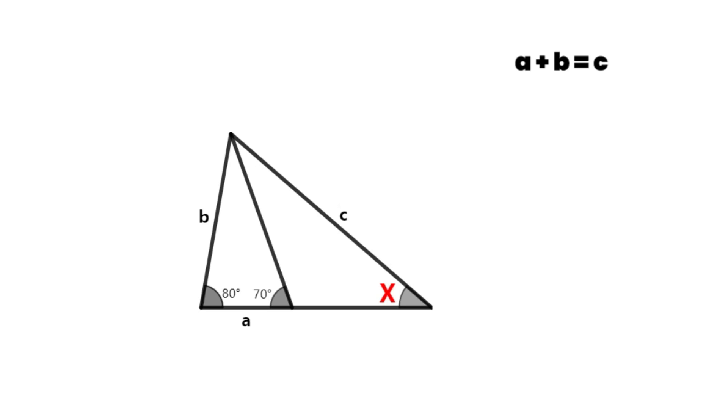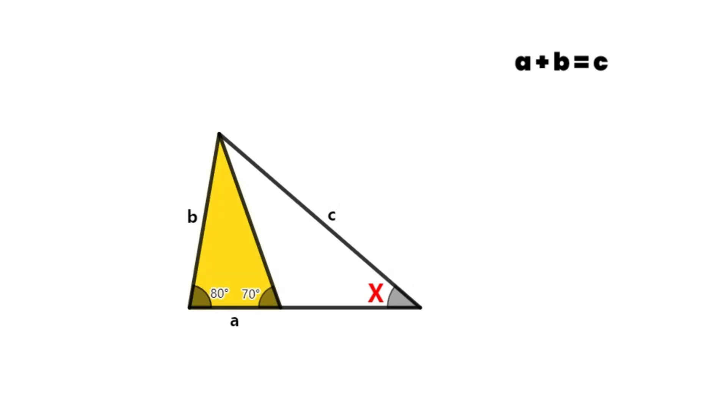Firstly, let's find out what hidden conditions are in the problem. In this problem, the two angles of this yellow triangle are 80 degrees and 70 degrees. We can figure out that the other angle is equal to 30 degrees.